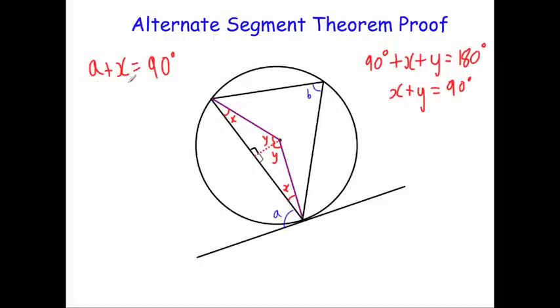So here I've got A plus X is equal to 90, and here I've got Y plus X is equal to 90. Therefore, I know my A and my Y must be the same as each other. So A equals Y. In other words, this angle here is the same as this angle here. Okay, now finally,